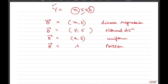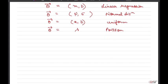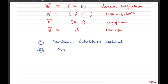Once we say that a random variable follows a particular distribution, we need to determine the value of theta to completely describe the underlying generational process of this data. There are multiple ways to estimate theta, and there are two main schools of thought: one is maximum likelihood estimation, and the second approach is maximum a posteriori, or MAP. Today we are going to focus on maximum likelihood estimation.